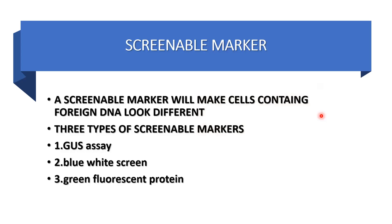The second category is screenable markers. A screenable marker will make cells containing foreign DNA or DNA of interest look different. There are three types of screenable markers: GUS assay, blue-white screen, and green fluorescent protein.